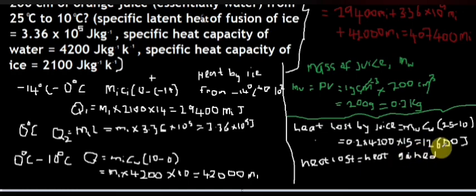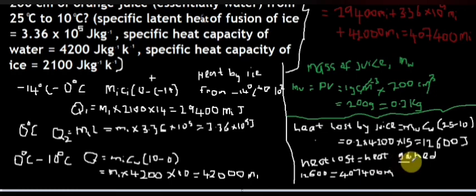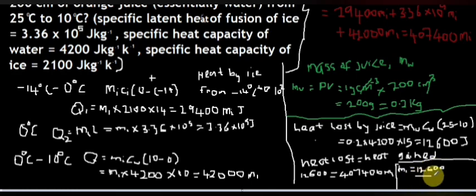Therefore, heat lost by the juice — 12,600 joules — equals the heat gained by the ice, which is 407,400 × mᵢ. Making mᵢ the subject of the formula, the mass of ice equals 12,600 divided by 407,400. On dividing, the mass of ice equals 0.031 kilograms.